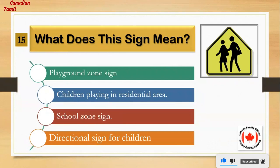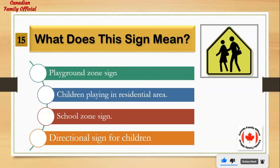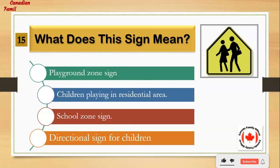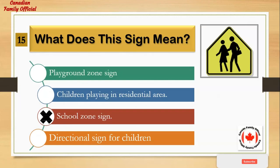What does this sign mean? Number 1: playground zone sign. Number 2: children playing in residential area. Number 3: school zone sign. Number 4: directional sign for children. And the answer is: school zone sign.